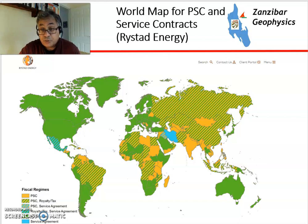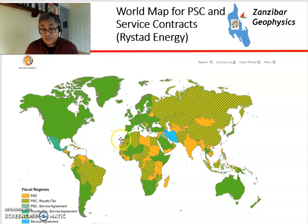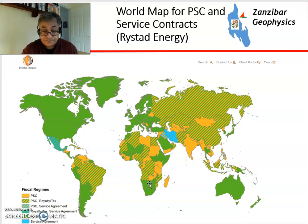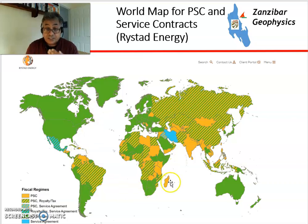This is a map from Rystad Energy, a major oil and gas consultancy, which shows the different types of contracts around the world. The greens are concessions with royalty and tax, and the oranges are production sharing contracts, found in places like Libya and India. Some governments have hybrid regimes — they used to have PSCs and then moved to tax and royalty, or vice versa, so some old contracts still exist. Iran has a pure service contract. Mexico used to have a pure service contract, but that didn't attract many investors, so they moved to a tax and royalty system for some new licenses to attract more foreign investment. Contract types vary by country and change through time.